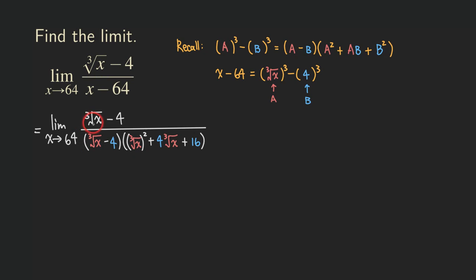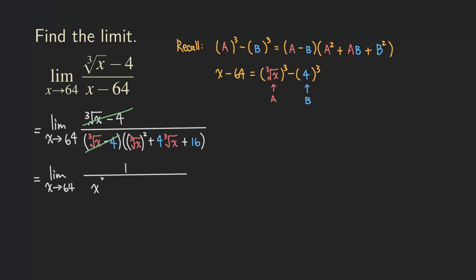Now do you see what's going on? It's really just this factor — cube root of x minus 4 — that's causing the zero over zero. And it turns out we can cancel them. After canceling we are left with just 1 over the trinomial: x to the two-thirds plus 4 times cube root of x plus 16. Because we no longer have the indeterminate form, we can directly substitute 64.